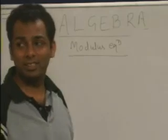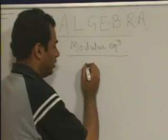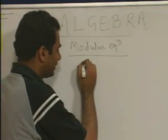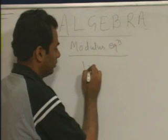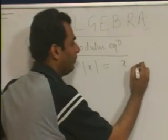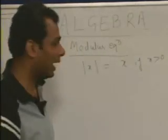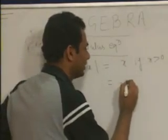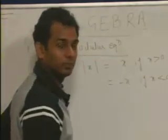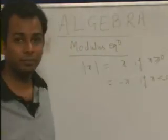In case of modulus equations, always know that mod of x is equal to x if x is greater than or equal to 0, and it is equal to minus x if x is less than 0.